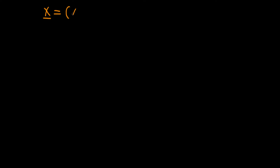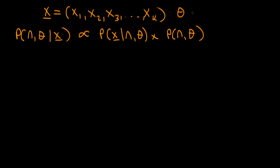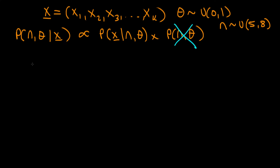We have a vector of x values where each xi corresponds to the number of heads thrown in each of the k experiments. The first step to deriving a Gibbs sampler is to derive the joint distribution of n and theta conditional on x. From Bayes' rule, this is given up to a constant of proportionality by the likelihood of x conditional on n and theta, times the priors of n and theta. We assume theta is uniformly distributed between 0 and 1, and that n follows a discrete uniform distribution between 5 and 8. Since neither prior contains n or theta dependence, we only need to write down the likelihood.